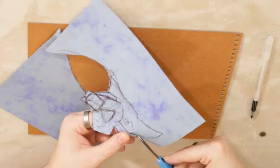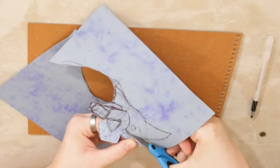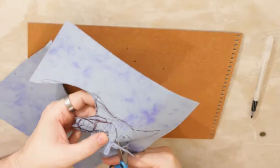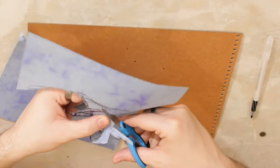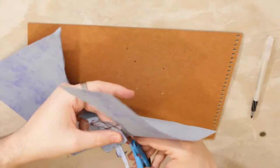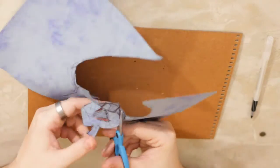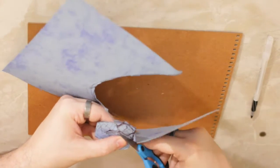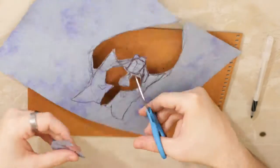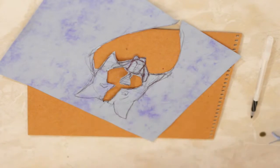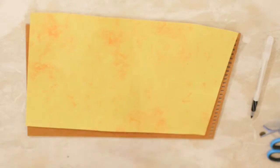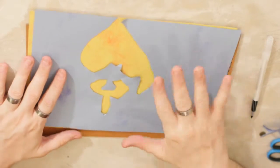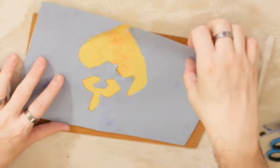And grab the other side, should be pretty simple. If you want you can even cut out the eyes because those will be a little bit different color. There we go.